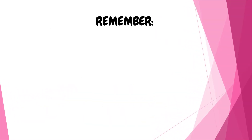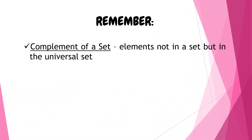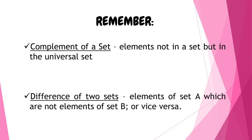Let us now summarize what we have learned in this lesson. First, when we say complement of a set, those are the elements not in that set but in the universal set — so complement of set A means elements not in A but in the universal set. When we say difference of two sets: A minus B means elements in A that are not in B, and B minus A means elements in B that are not in A.